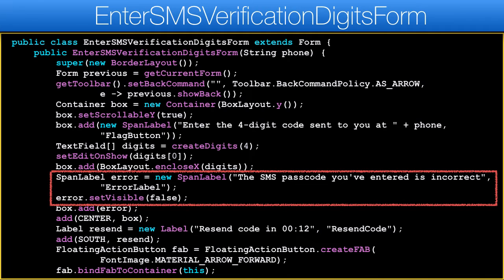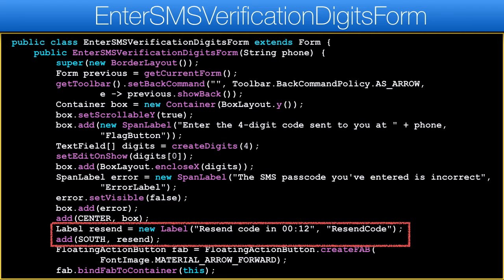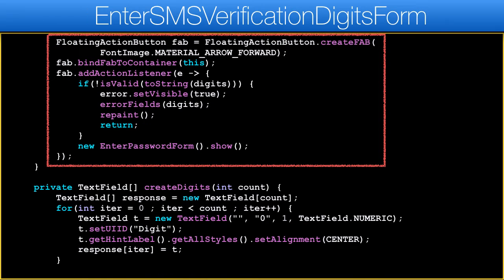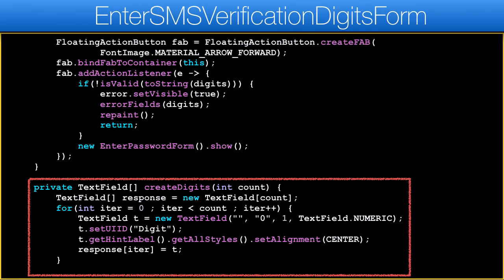The error label is always there, we just hide it. For now I don't animate the resend text. Notice that I use border layout to position the resend label at the bottom and place the rest of the content in a box layout in the center. When the floating action button is pressed we validate the input so we can decide whether to show an error or proceed.